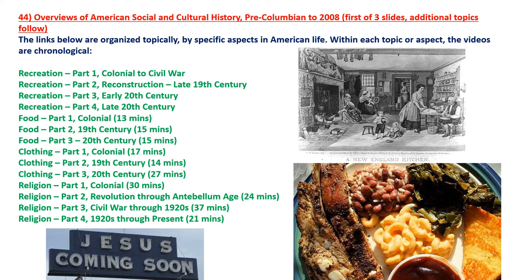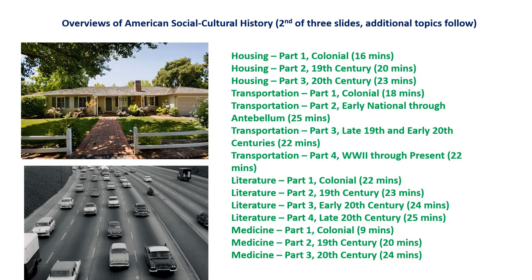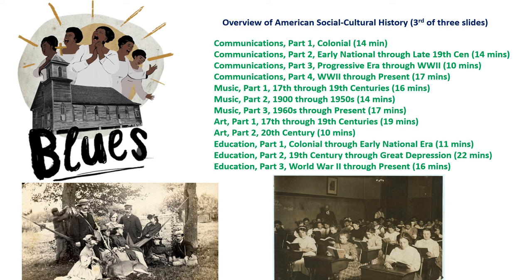The final, 44th topic is a little different — overviews of American social and cultural history from pre-Columbian times all the way through 2008. There are many of these videos, organized topically by specific aspects of American life, with the videos within each topic presented chronologically. Topics include recreation history, food history, clothing history, religious history, architecture and housing, transportation, literature and books, medicine, the history of American language and communications, the history of American music and art, and the history of education.